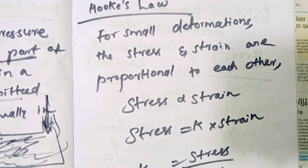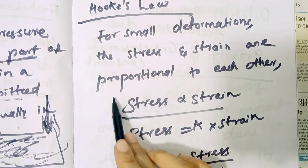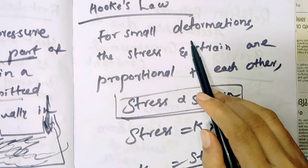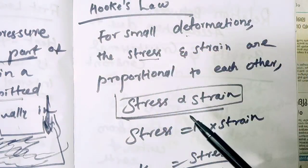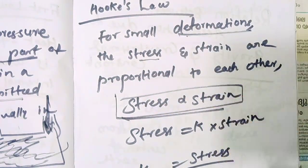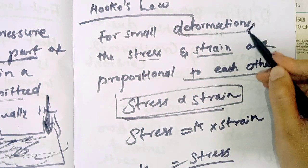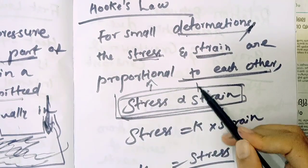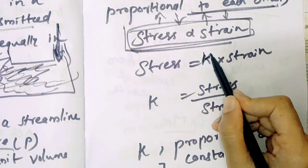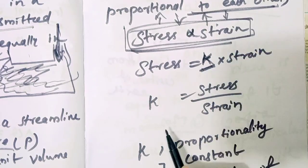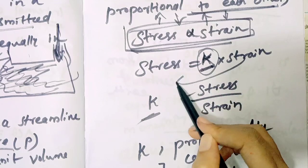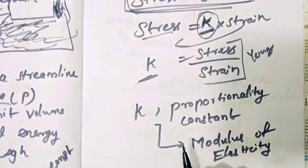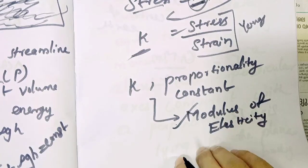Next is Hooke's Law. Stress and strain are proportional. For small deformation, the stress and strain are proportional. This proportionality constant is called Young's modulus. Stress divided by strain gives us a constant, which we call the proportionality constant or Young's modulus. Stay in Hooke's Law.